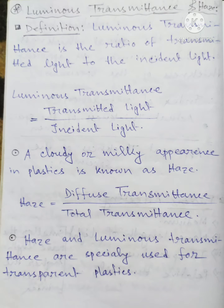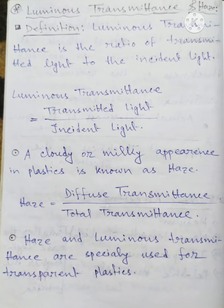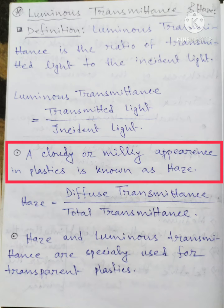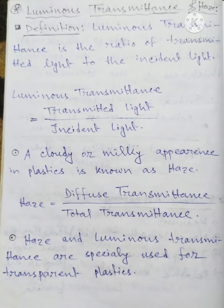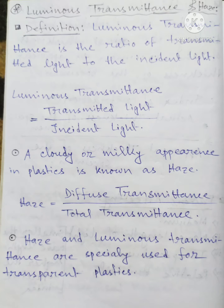Welcome to my YouTube channel. Today we are discussing luminous transmittance and haze. Luminous transmittance is mainly the ratio of transmitted light to incident light. Haze is a cloudy or milky appearance in plastics. Haze is also a ratio of diffuse transmittance to total transmittance. Haze and luminous transmittance are especially used for transparent plastics.